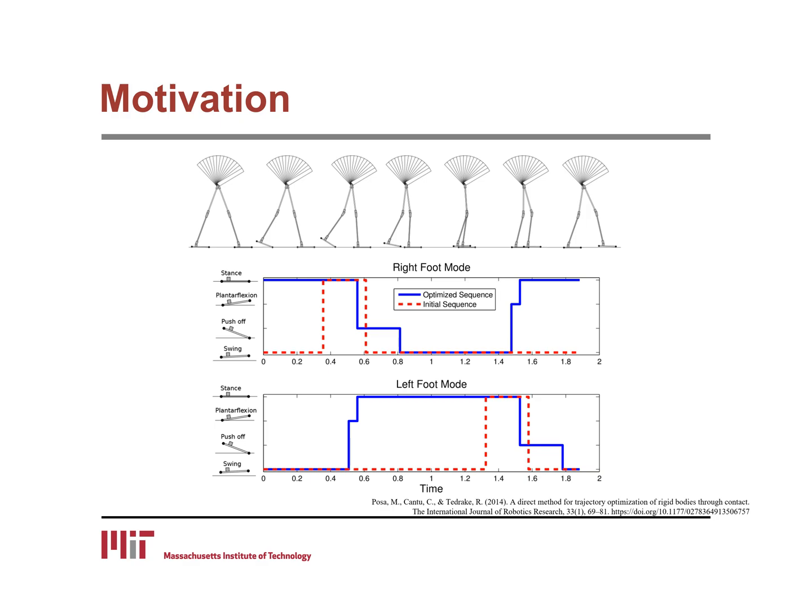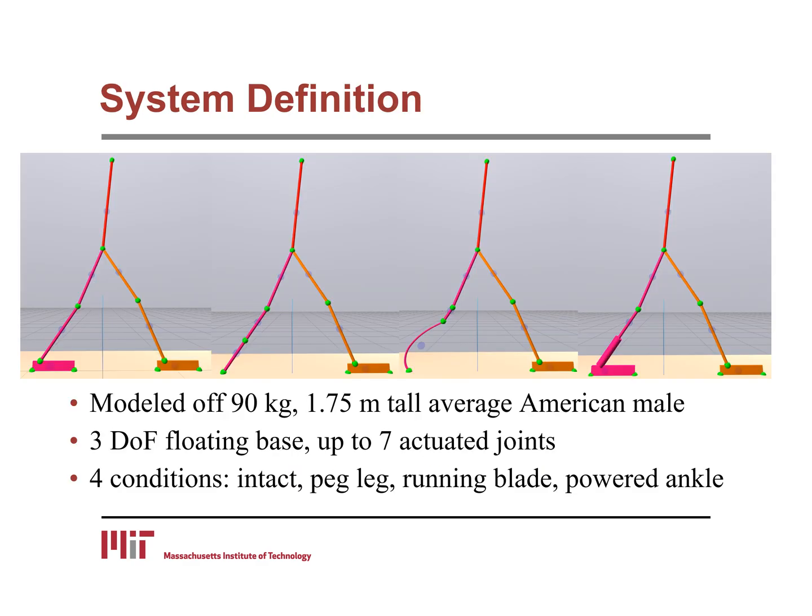That uses complementarity conditions to enforce feasible constraints without pre-defining a mode sequence, seeking to find feasible walking gaits for a planar human walking model comparing the intact limb, peg leg, energy returning J-spring, and microprocessor controlled power to ankle prosthesis conditions.